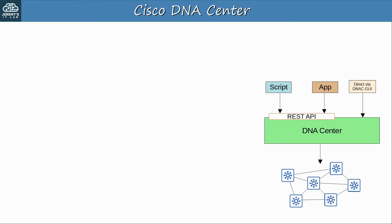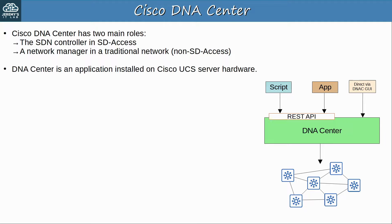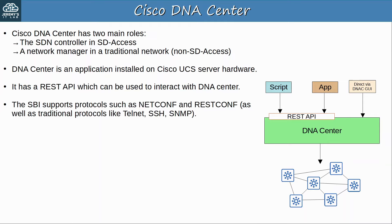Now let's look a bit more at DNA Center. DNA Center has two main roles. First, it is the SDN controller used in SD Access. Additionally, it can be a network manager in a traditional network that isn't using SD Access — it still acts as a central point to monitor, analyze, and configure the network. DNA Center is a software application installed on Cisco UCS server hardware. DNA Center has a REST API which can be used to interact with it, and its southbound interface supports protocols such as NetConf and RESTConf, as well as traditional protocols Telnet, SSH, and SNMP, to control and monitor devices.